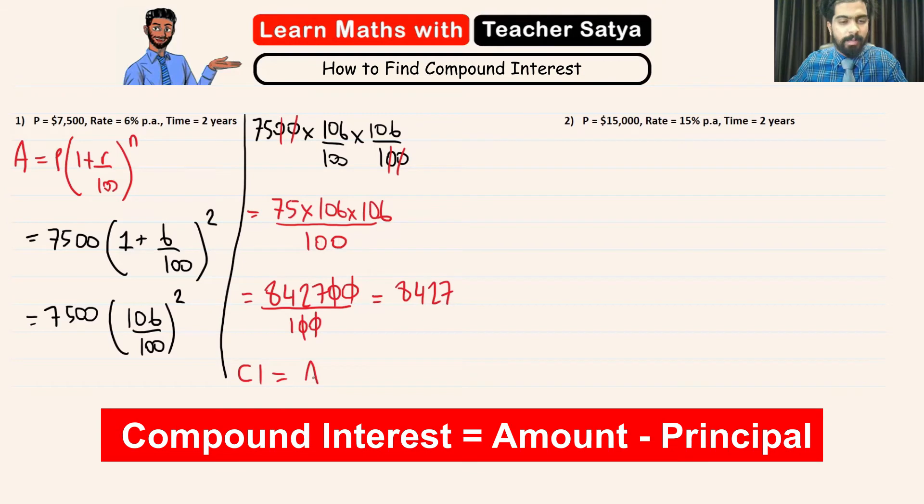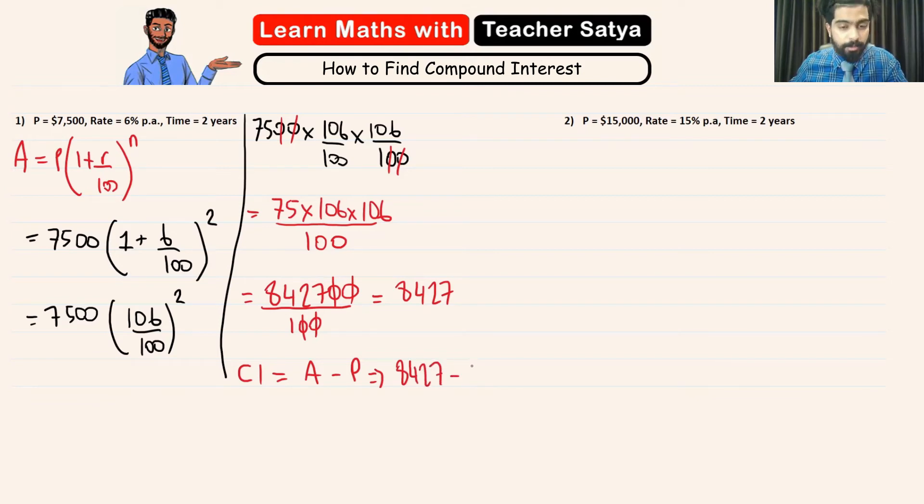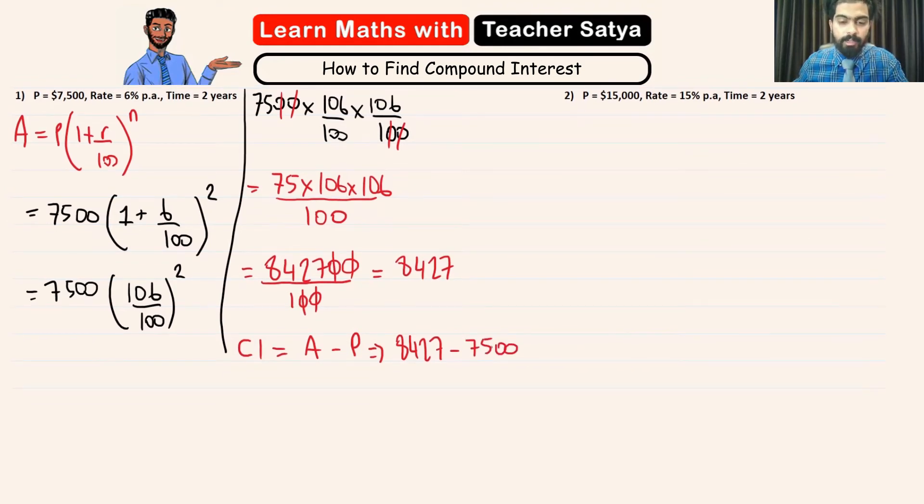Now, we are going to go and find the CI. So, the CI is the amount minus the principle. So, what we have here is 8427 minus our principle, which is 7500. If we subtract it, we would get $927 as our compound interest. Now, let's go ahead and solve one more question.